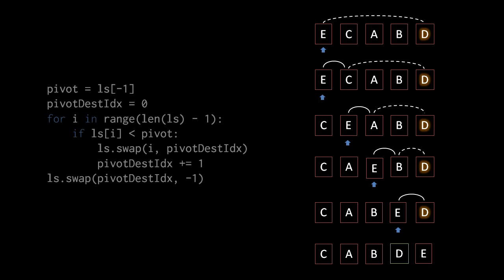Looking at the code for this process, first we get the pivot value and initialize our pivot destination index to 0. Then we iterate from index 0 up to but not including the index which is the length of the list minus 1. In the loop, we check if the value at the current index is less than the pivot, and if so, we swap the value at that index with the pivot destination index, and then increment the pivot destination index by 1. For simplicity I'm assuming the existence of a swap method to make the code more compact — just assume it takes two index values and swaps the values at those indexes in the list. Once the loop is done, the final step is to swap the values at the pivot destination index with the pivot itself, which is still sitting at index negative 1.